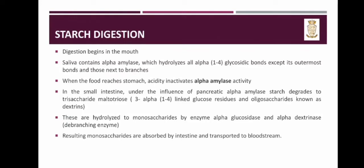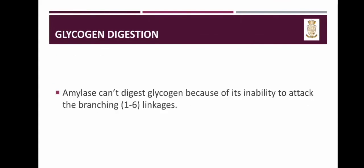These glucose residues and dextrins are hydrolyzed to monosaccharides by the enzymes alpha glucosidase and alpha dextrinase. Alpha dextrinase is also known as the debranching enzyme. The resulting monosaccharides are absorbed by the intestine and transported to the bloodstream. Thus starch digestion is completed.